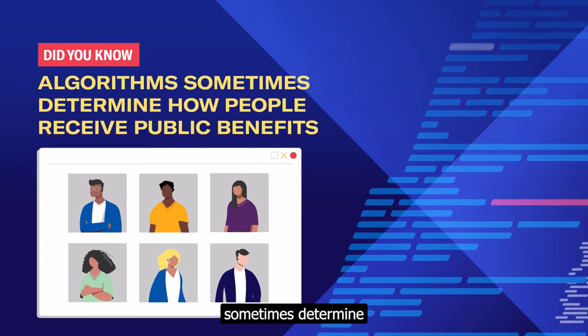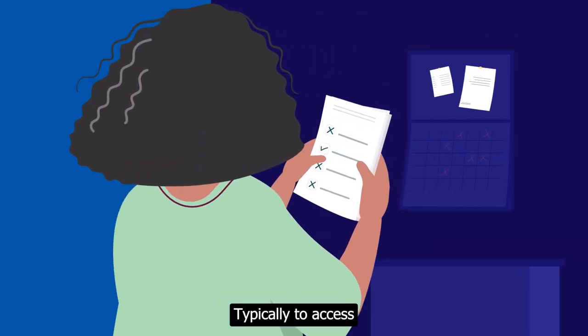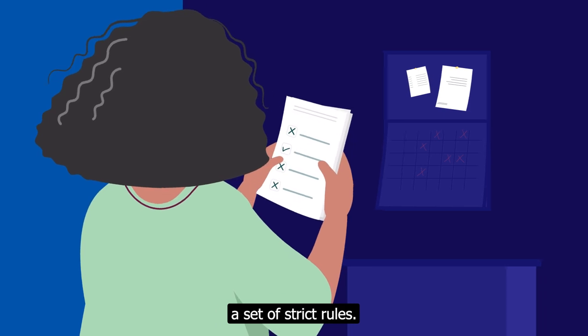Did you know algorithms sometimes determine how people receive public benefits? Typically, to access their benefits, a person is required to follow a set of strict rules.